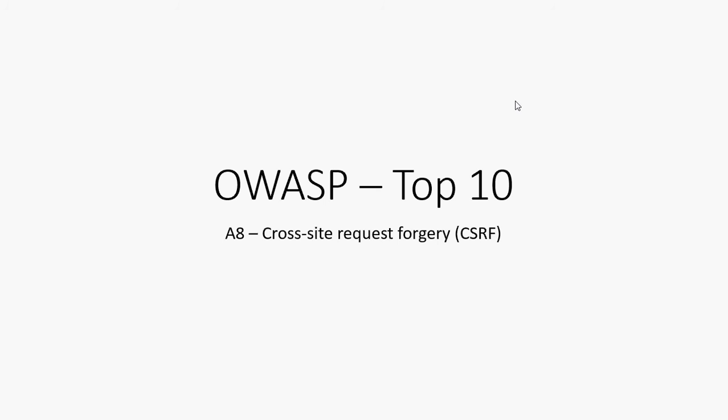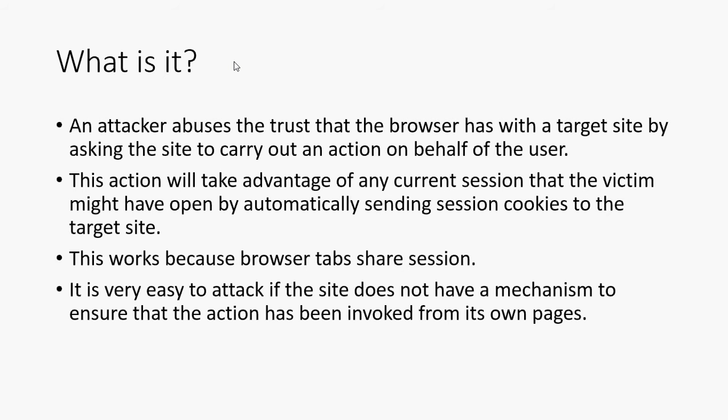The good news is most frameworks have a protection mechanism built in, and it's usually very easy to enable. Cross-site request forgery occurs when an attacker using their own site abuses the trust that the browser has with a target site, asking that victim site to carry out an action pretending to be on behalf of the user, when in actual fact it's the attacker that's caused it to happen.